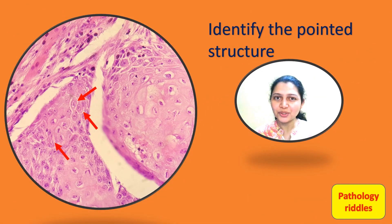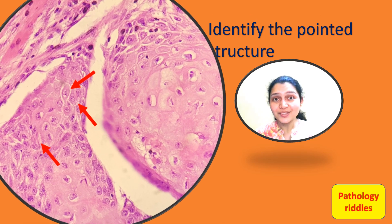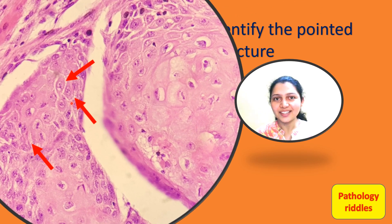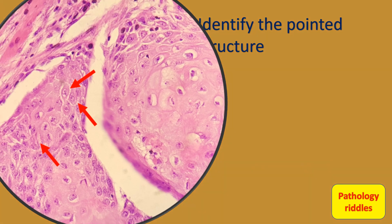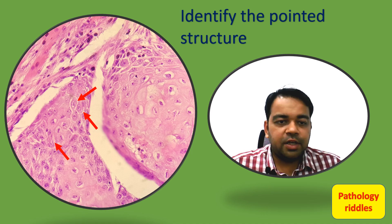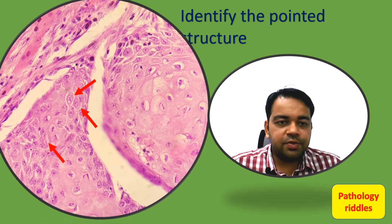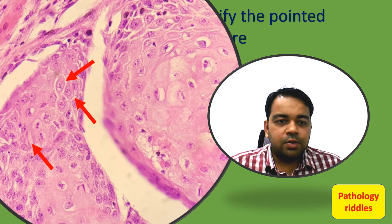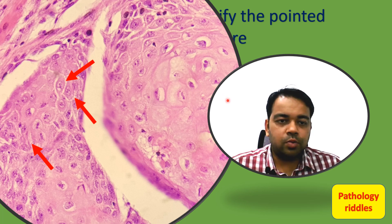Did you know about the information presented in the last slide? Not many of them would know about it. So let's go to the third question: identify the pointed structure in this slide. The pointed structure here is called intercellular bridges, which is characteristic of a squamous cell. So whenever you have confusion whether it is squamous cell carcinoma or adenocarcinoma, you can always rely on these intercellular bridges, which are very prominent in squamous cell carcinoma.